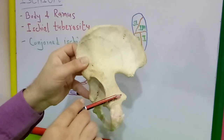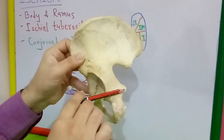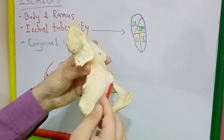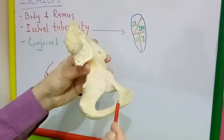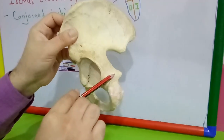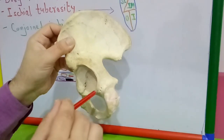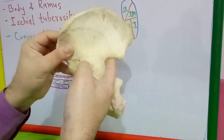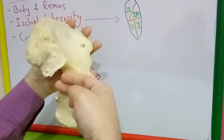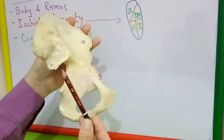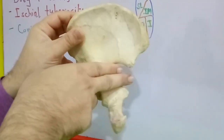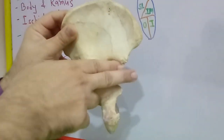The lower grooved part of the dorsal surface is related to the tendon of obturator internus muscle. The obturator internus muscle arises around the margin of the obturator foramen from the pelvic aspect. Its tendon passes through the lesser sciatic notch, occupies the grooved part of the dorsal surface, and then goes towards its insertion into the greater trochanter of the femur. The greater sciatic notch is filled up by the piriformis muscle, which originates from the sacrum and exits through the notch.